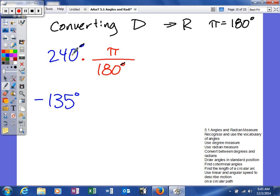We can divide both of them by 10, it'll leave us 24 and 18. We can divide both of them by 6, so that'll be 4 and 3, so we get 4 pi thirds.